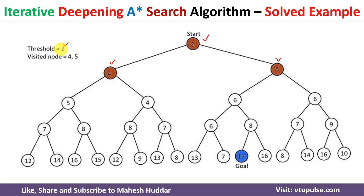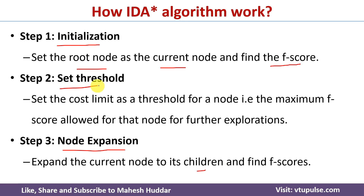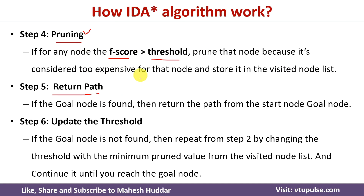The child with f-score 4 is greater than threshold 2, so we cannot explore it. Similarly, 5 is greater than 2, so we prune it. This is called pruning — if the f-score is greater than the threshold we prune that node. If the f-score is not greater than the threshold we keep exploring, and when we reach the goal node we return the path. If we don't find the goal node, we increment the threshold and go back to step two. This process repeats until we find the goal node.